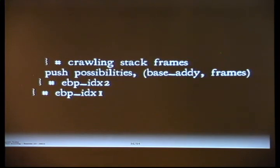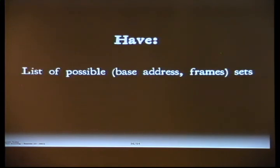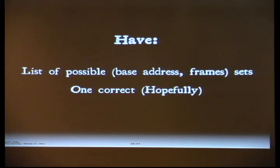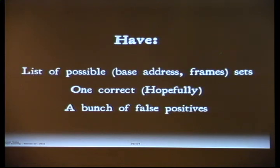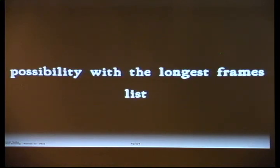At this point, we have a list of possible base addresses and frame sets — a bunch of candidate linked lists found in our stack dump, one of which is correct, along with likely some false positives. The real question is: which one is most likely the actual stack frames? In all of my testing, the possibility with the longest list of frames is most likely the actual structure of frames on the stack.